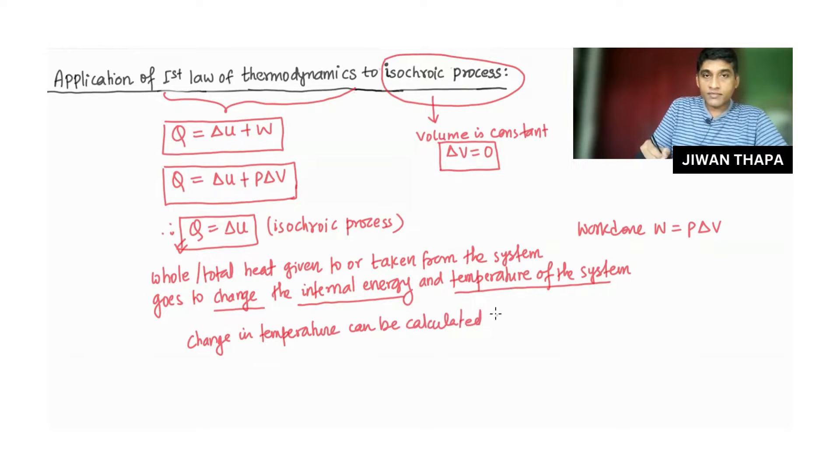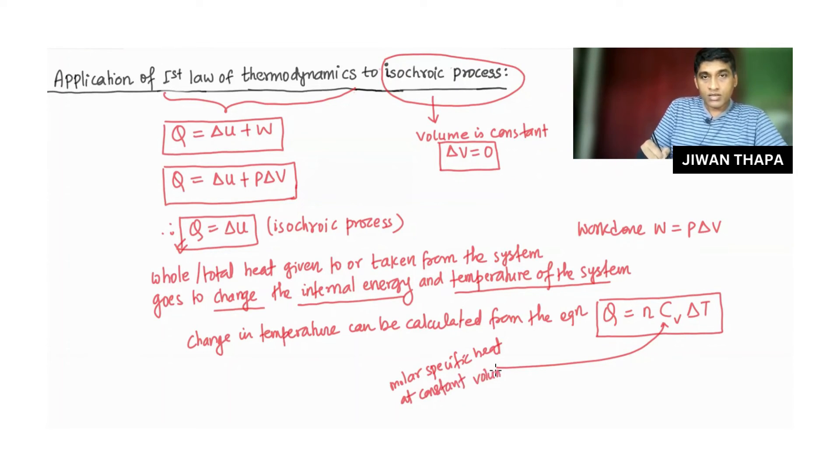It is calculated from the equation Q equals N C V times delta T, and this C V is called molar specific heat at constant volume of a gas.